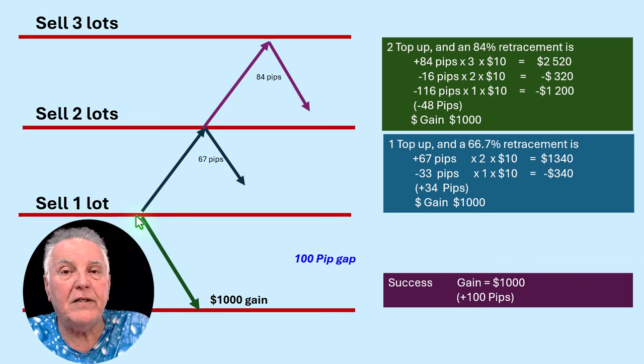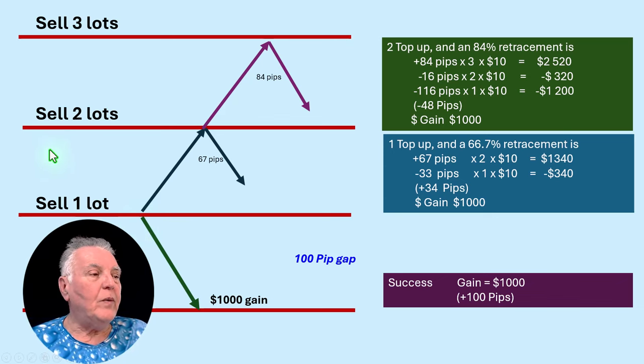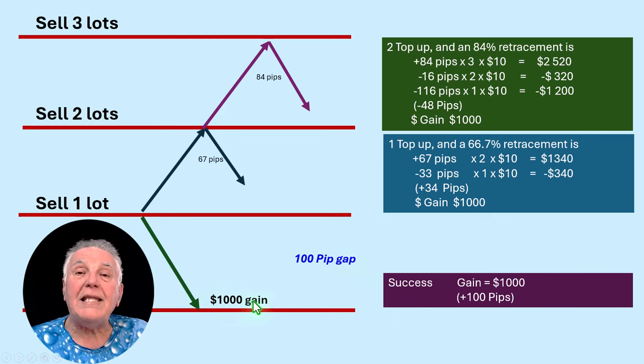So what would typically happen: you enter a sell over here with one lot, let's say, and it goes positive. Let's say this is 100 pips. It goes positive and you make a $1,000 gain on that particular transaction.